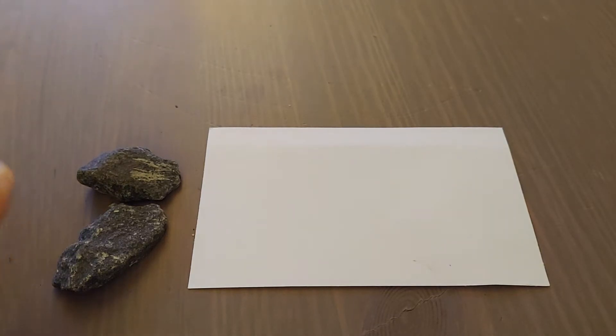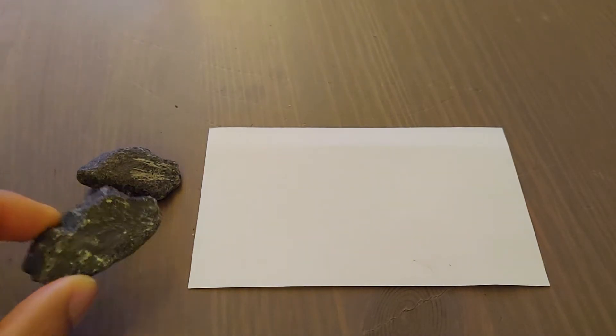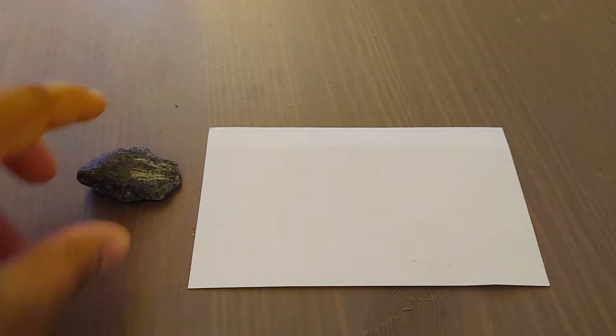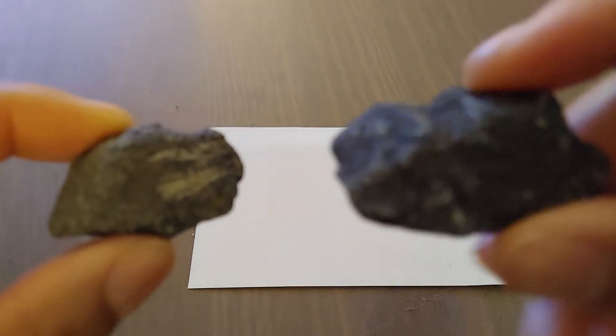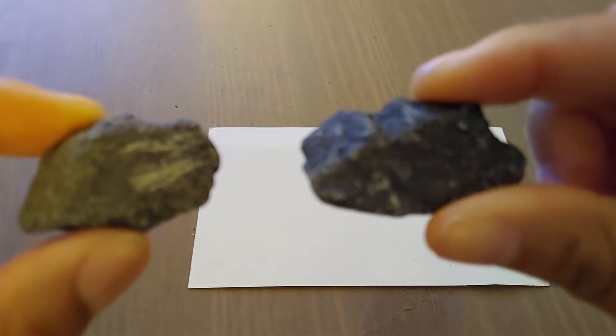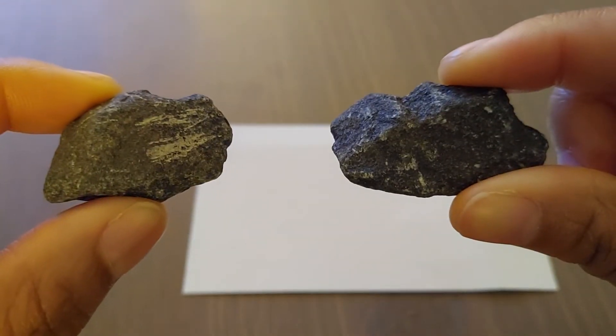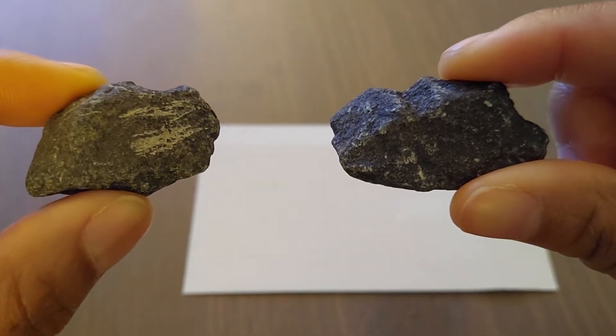So today I have some rocks here, two rocks that we're going to be looking at and we are going to see what happens when rocks rub together. Before we begin, I want you to take a look at the rocks I have and I want you to look closely and describe these rocks using the property words that we have talked about in class.